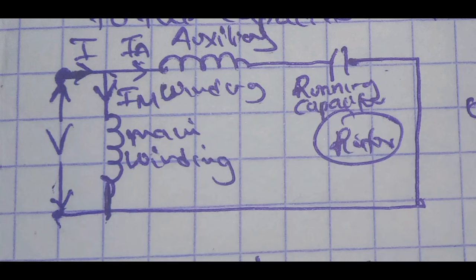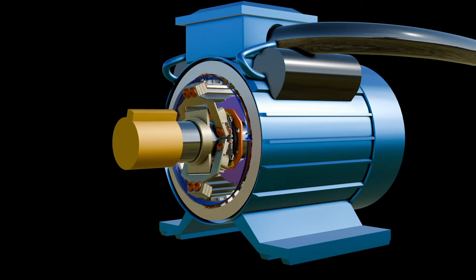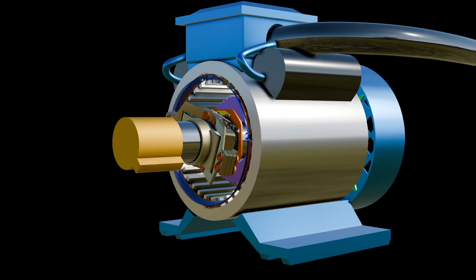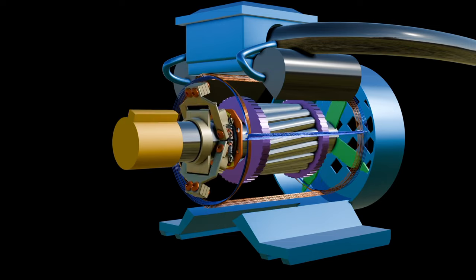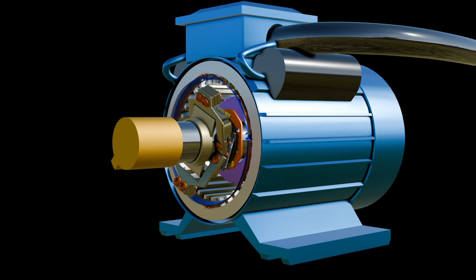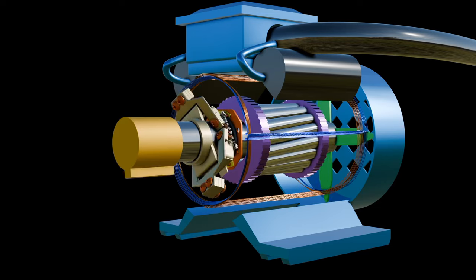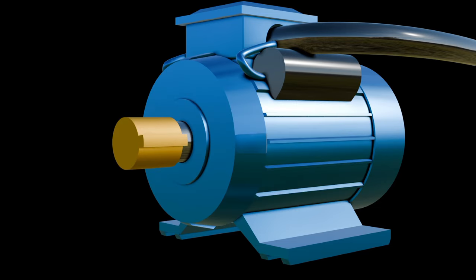Permanent capacitor induction motor: Here, the low value capacitor is connected constantly with the auxiliary winding. Here, the capacitor has low capacitance. The capacitor is used to increase the starting torque but it is low compared to capacitor start induction motors. The power factor and efficiency of this motor are very high. And also it has high starting torque that is 80% of full load.